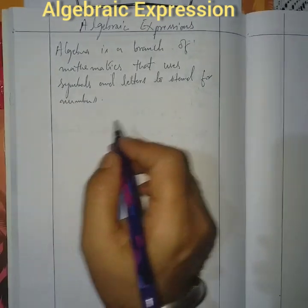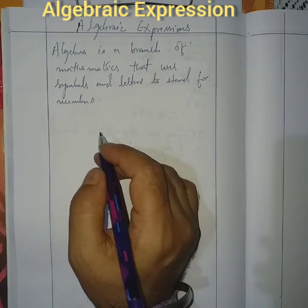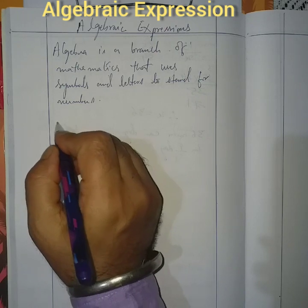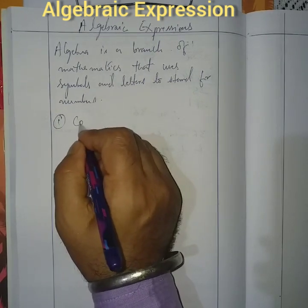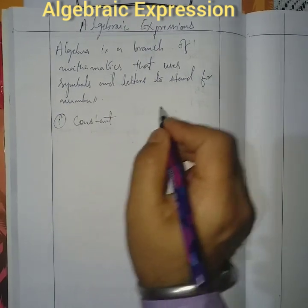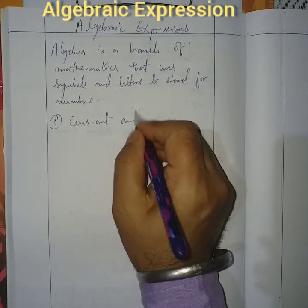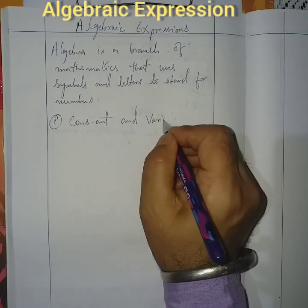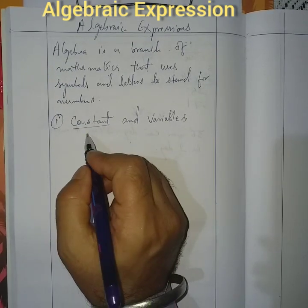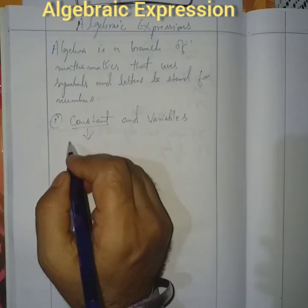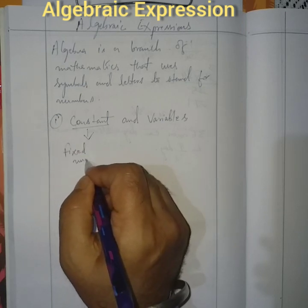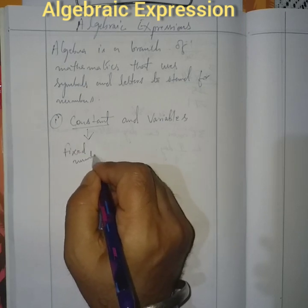In algebraic expressions, we have a few terms that we should know. Number one is constants and variables. Now, what is a constant? Constants are fixed numbers.